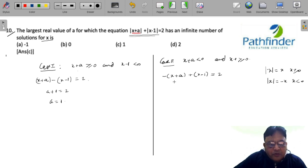So -x-a+x-1 = 2. x gets cancelled out, you will get a = -3. So there are two possible values: a = 1 and a = -3.